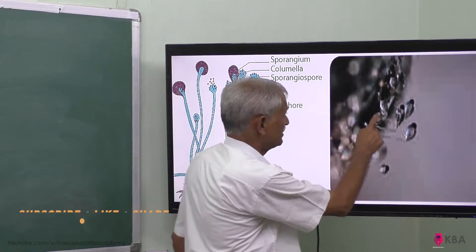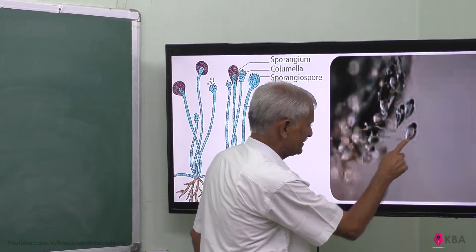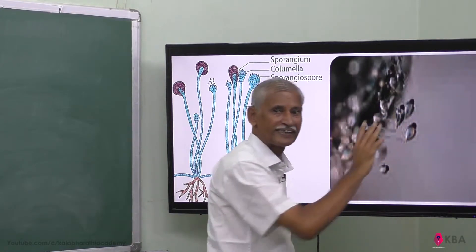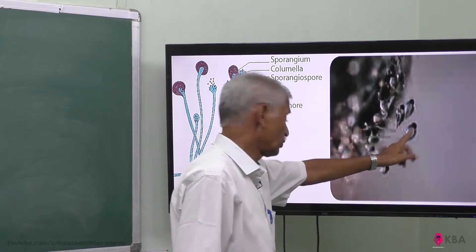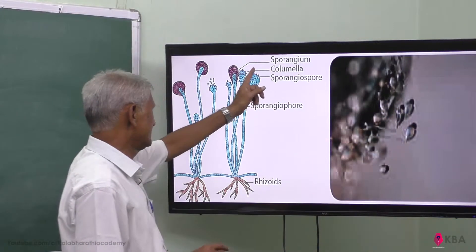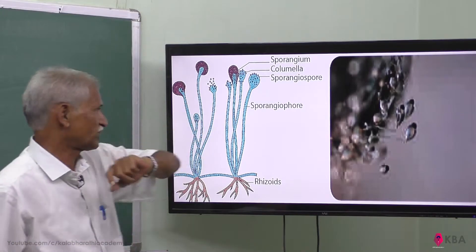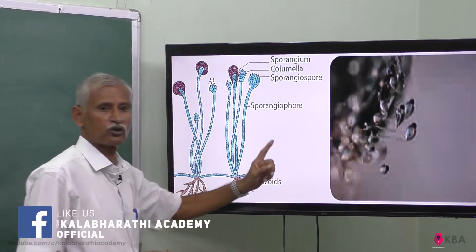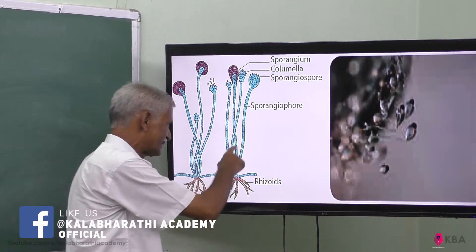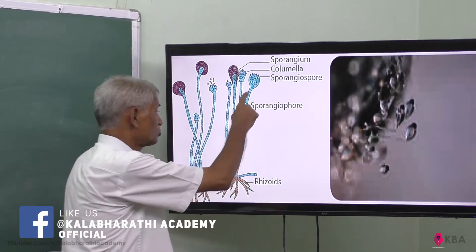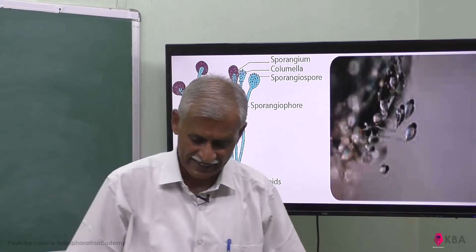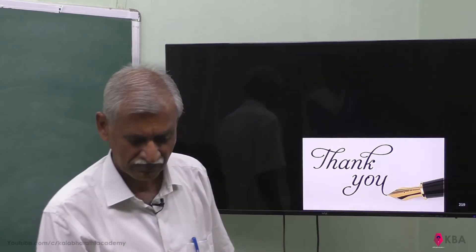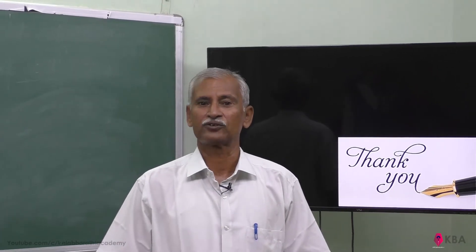This is how Zygomycetes spreads. The sporangium produces spores called sporangiospores, and the sporangium is formed by the sporangiophore. It is coenocytic — there is no septa — so many nuclei are present inside. This is Zygomycetes. In the next class we will see other phyla. Thank you so much.